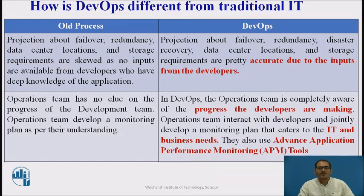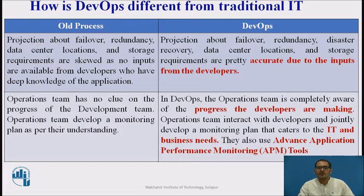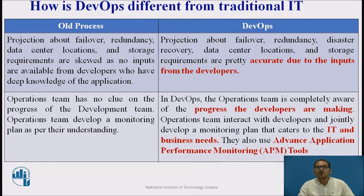In the old process, the operations team has no clue about the progress of the development team and can only develop a monitoring plan based on their own understanding. But in DevOps, the operations team is completely aware of the progress developers are making. They interact with developers and jointly develop a monitoring plan that caters to IT and business needs, and they use advanced application performance monitoring tools.